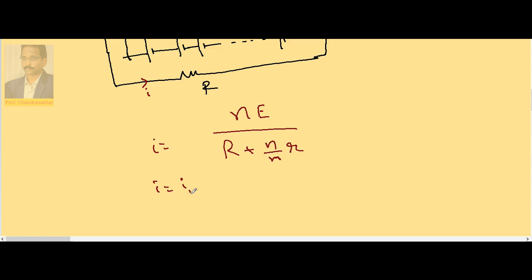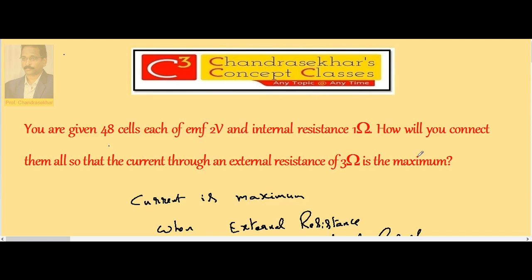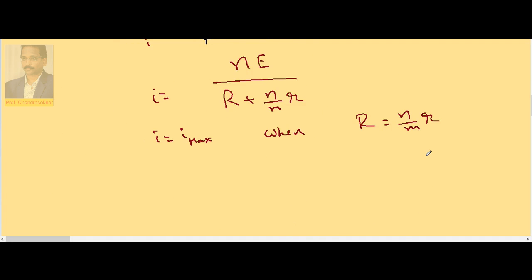So if I substitute the equations here, small r is 1 ohm and capital R is 3 ohms. So 3 ohm capital R is equal to n by m into small r, so n by m is equal to 3 is to 1.